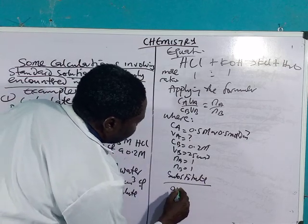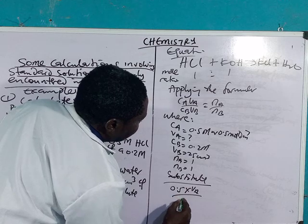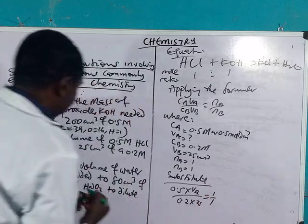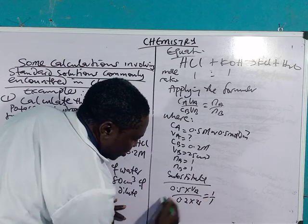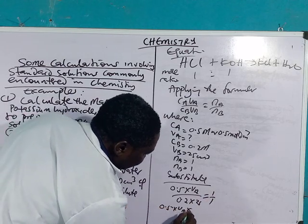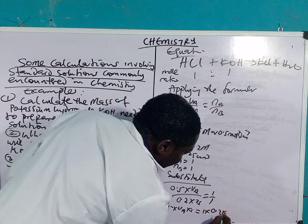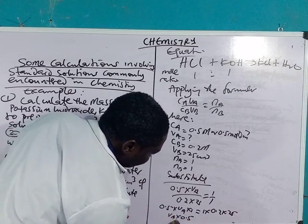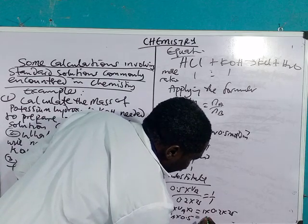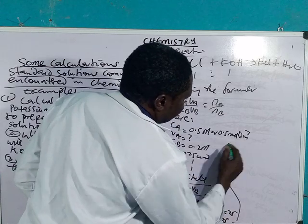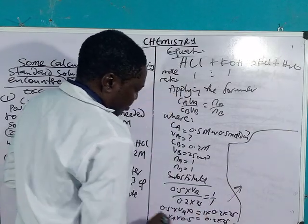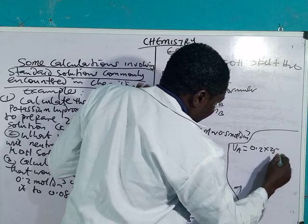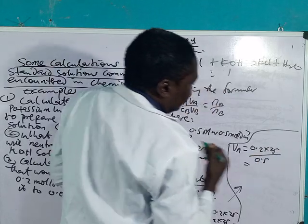You have 0.5 times V_A over 0.2 times 25, which gives you one over one. Then cross multiply: 0.5 times V_A times one equals one times 0.2 times 25. This becomes V_A times 0.5 equals 0.2 times 25.